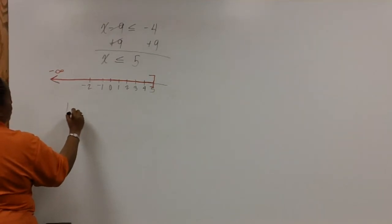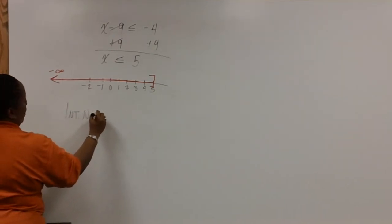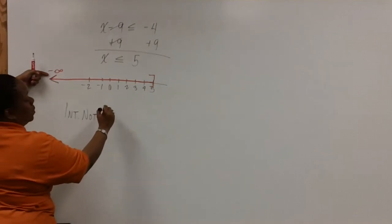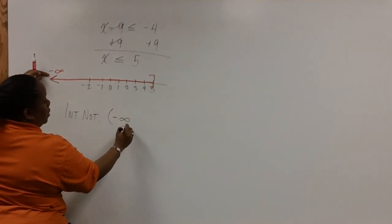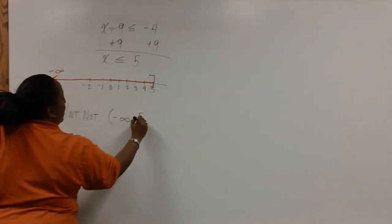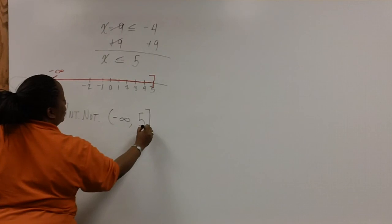Interval notation looks just like the graph. Starting from the left, we have a parenthesis on negative infinity, and it stops at 5 with a bracket on 5.